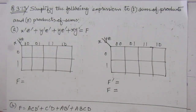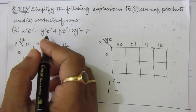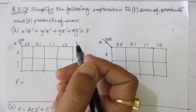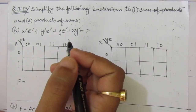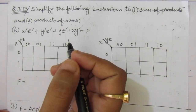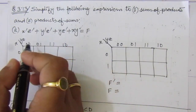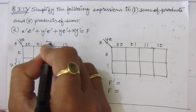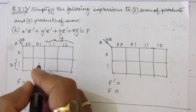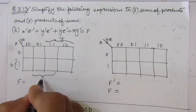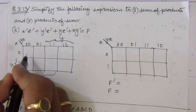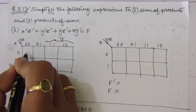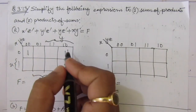Let us start one by one. The first problem is x-bar z-bar + y-bar z-bar + y z-bar + x y. Here we can see that it is a three-variable function; x, y, and z are the three variables. We'll put these in the K-map table. Let me first write down: x, y, and z. x-bar is the first row, and z-bar is the first column and the fourth column, so we'll put here one and one.